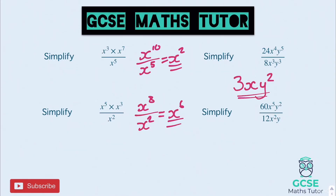The last one: 60 divided by 12 is 5. Subtracting the x powers gives x to the power of 3, and subtracting the y powers gives y to the power of 1. Again, we don't write the 1 — though omitting it would not be wrong.